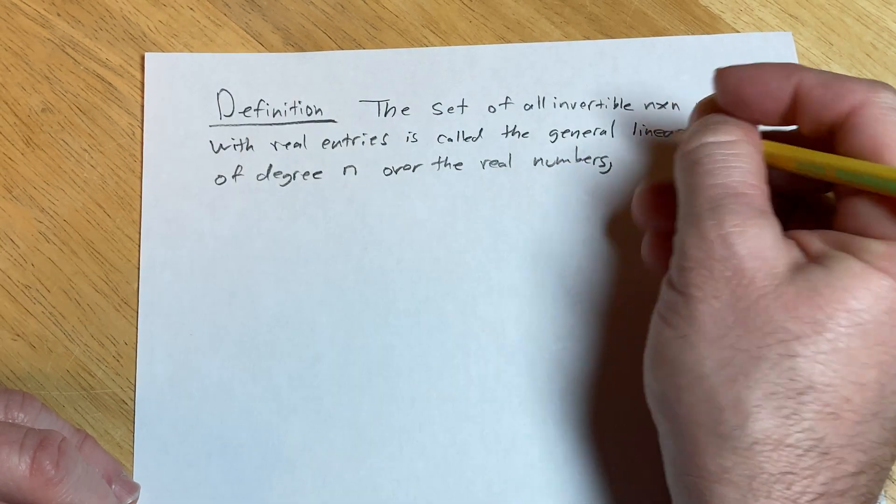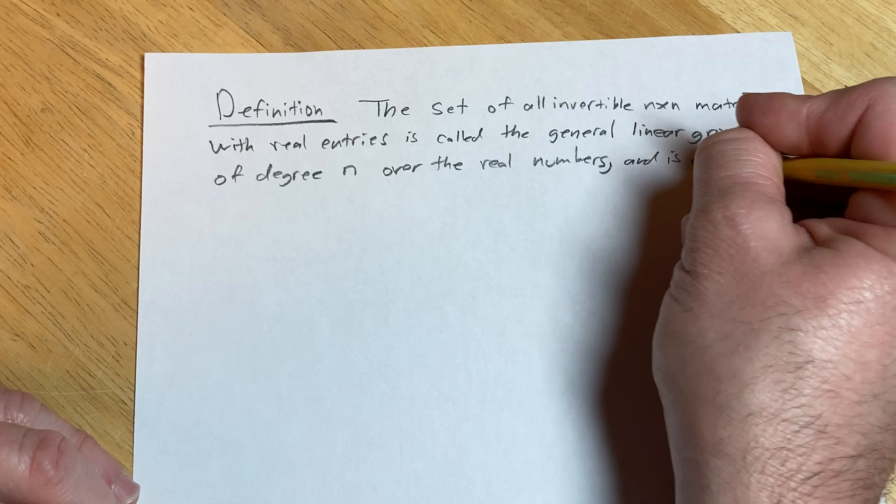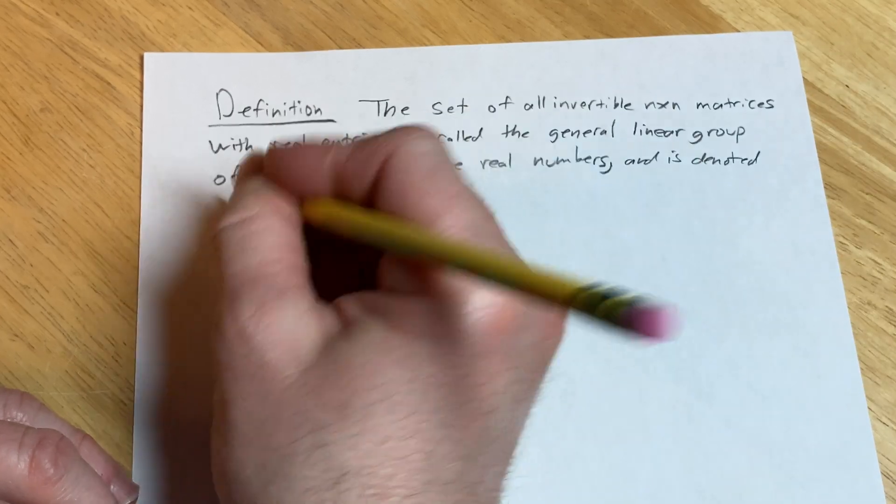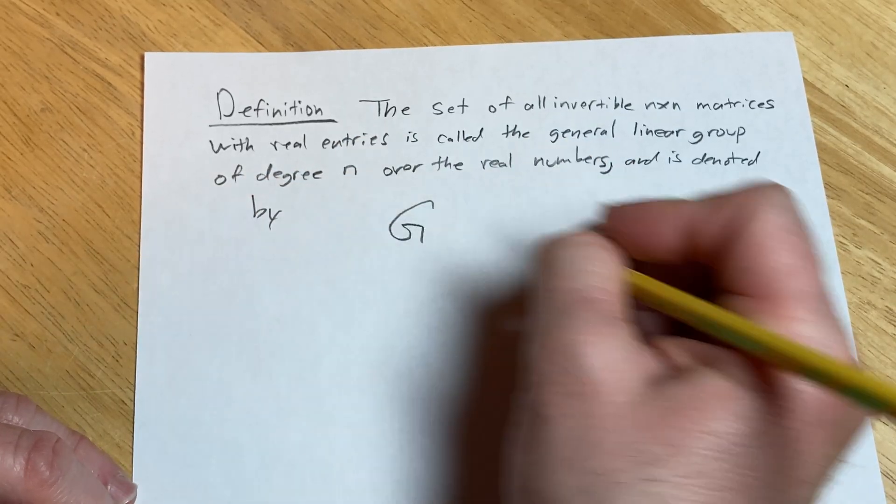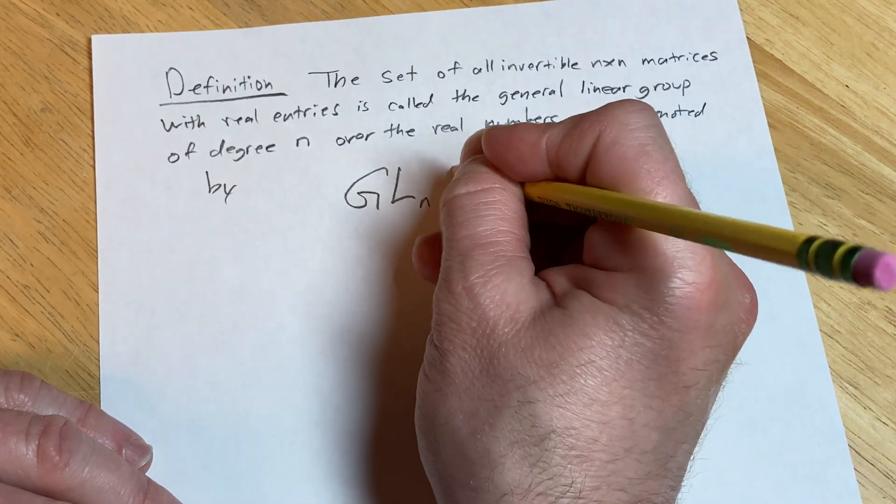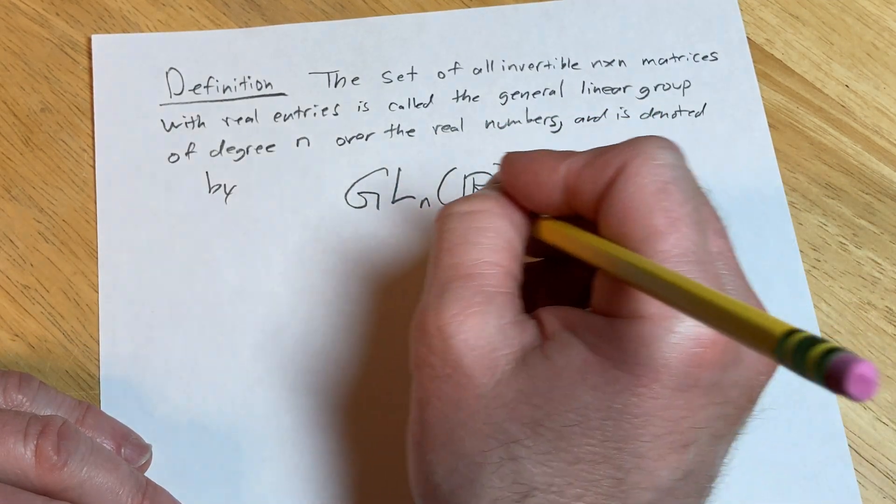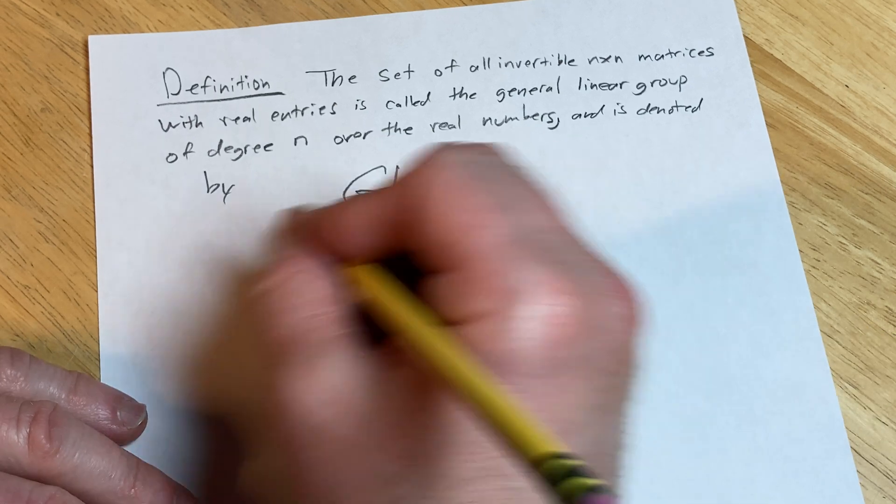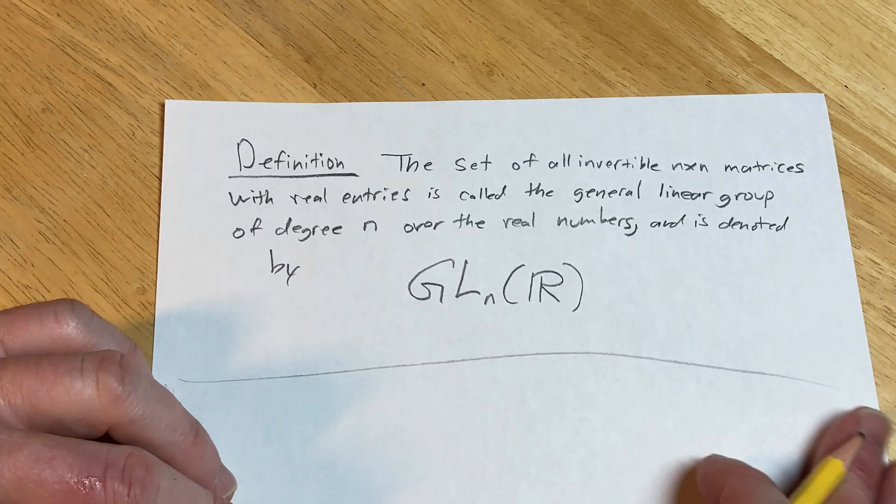It's noted by GL(n, R). There are different notations and you can show that this forms a group under matrix multiplication.